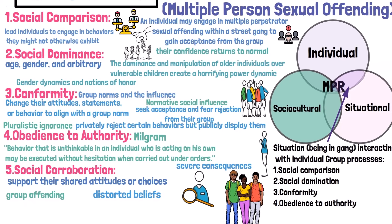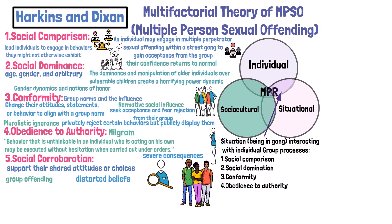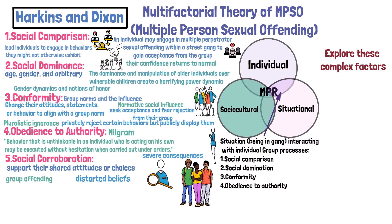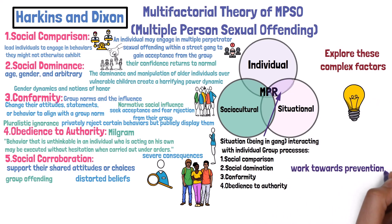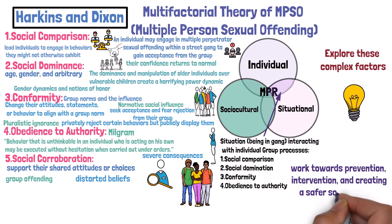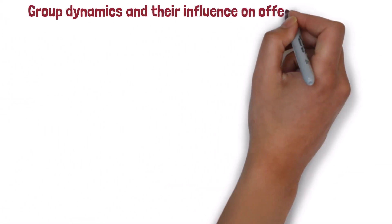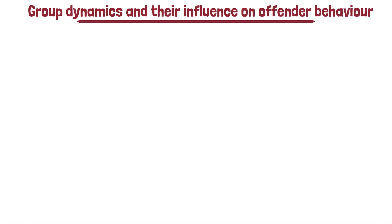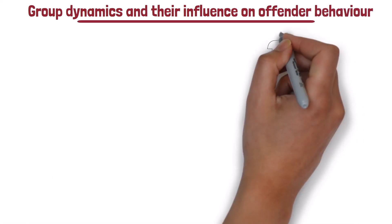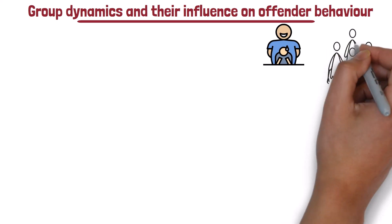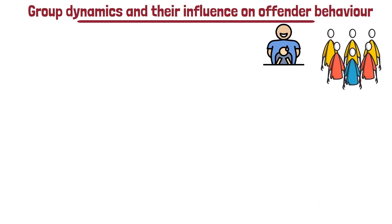Understanding the types of group offending, particularly multiple perpetrator sexual offending, requires us to explore these complex factors. By shedding light on these issues, we can work towards prevention, intervention, and creating a safer society for all. Let's move on to group dynamics and their influence on offender behavior — specifically sexual offenders and juvenile offenders — examining the social influence of groups and discussing various theories related to group behavior and deviance.